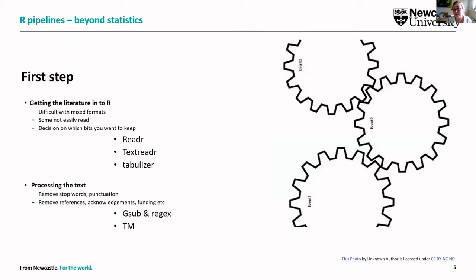My first step is getting the literature into R. R is notoriously difficult when it comes to reading PDFs, but there are a lot of packages with these functions. Things like reader, text reader, and tabulizer are common packages I use to help import data. This can be in the form of PDFs, Word documents, Excel files, or reference management software that's importing references.